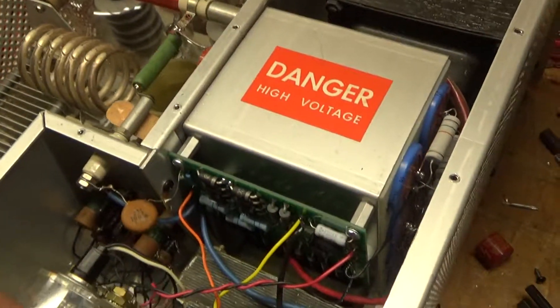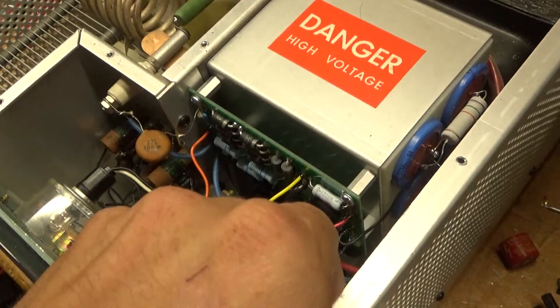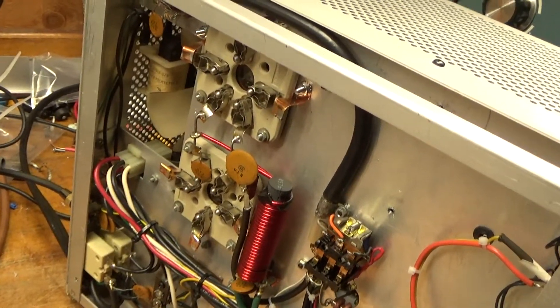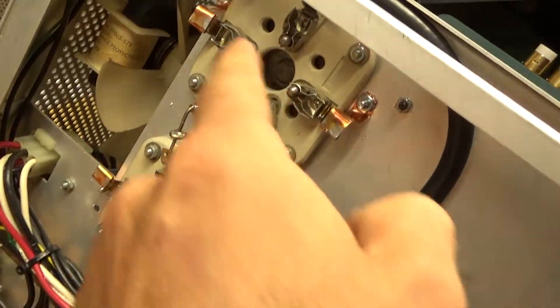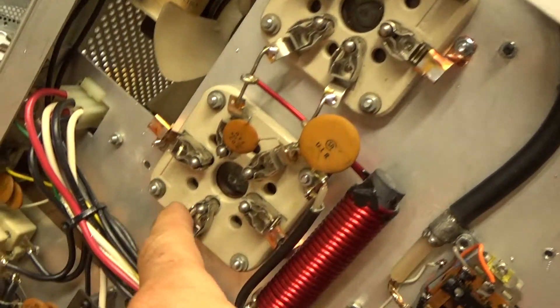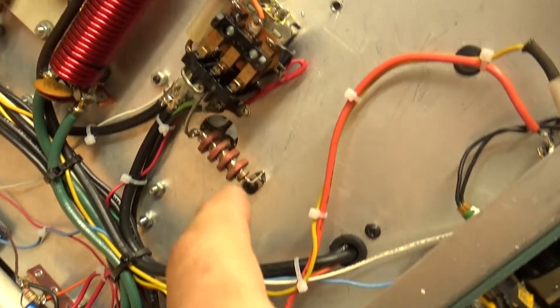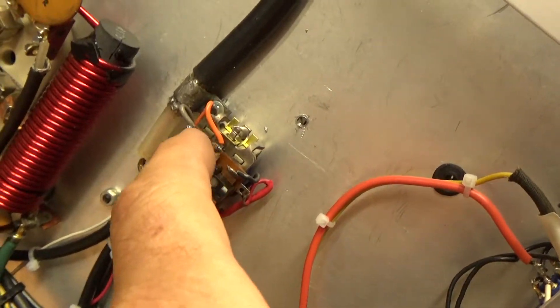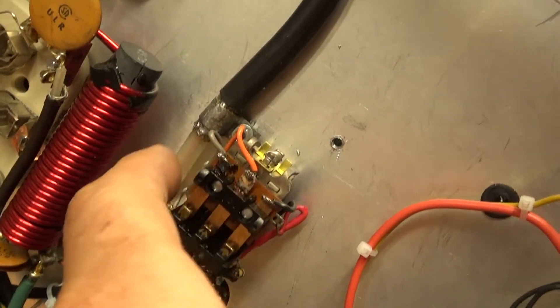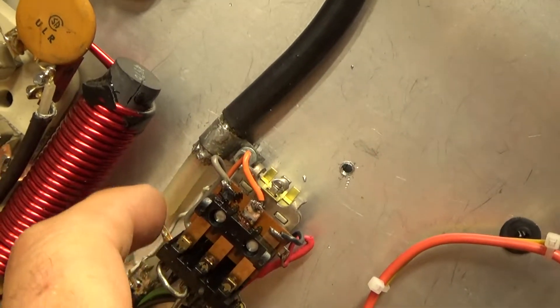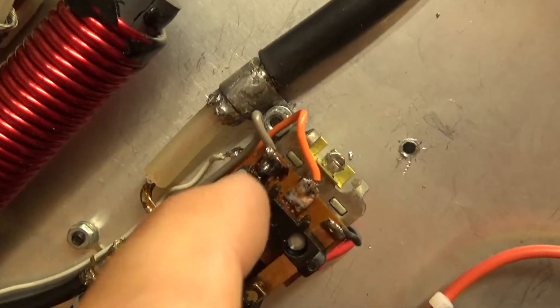It all came out really nice. I'm going to flip over to the bottom. Okay, so here's the bottom. Ended up regrounding the grids. Zip tied everything real nice. I had those heavy braided straps here, so I replaced the wires with the proper gauge wires, proper length.